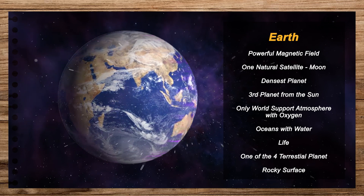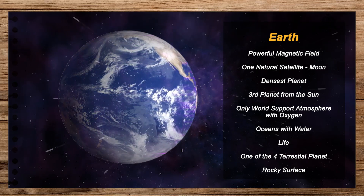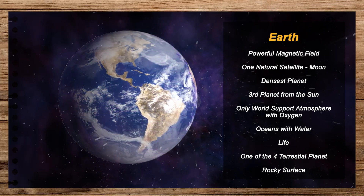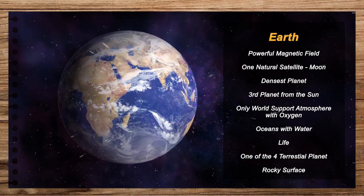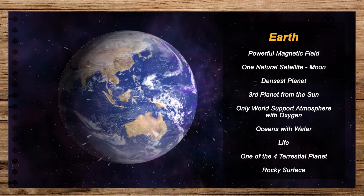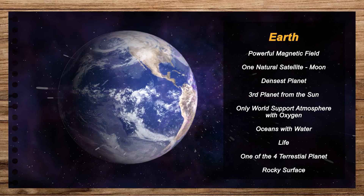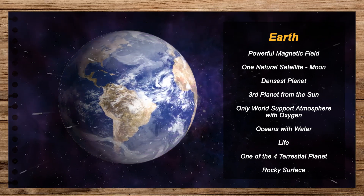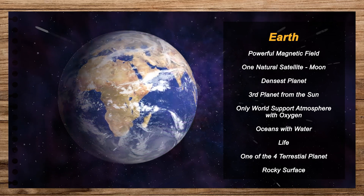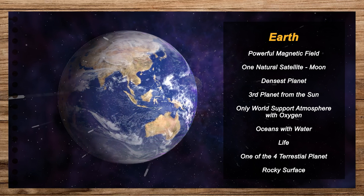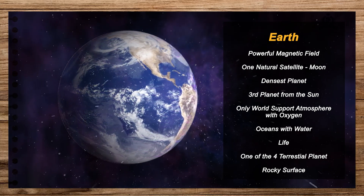A favorable temperature exists for the existence of life. If the heat received from the Sun were to increase or decrease by about 10%, a large part of the Earth would become unfit for living organisms. The presence of adequate water in the oceans provides ideal conditions for the origin and evolution of life. The presence of an atmosphere protects the Earth from harmful ultraviolet radiations from the Sun. When astronauts first saw the Earth from space it looked blue in color due to the presence of water, so the Earth is also called the watery planet or the blue planet.